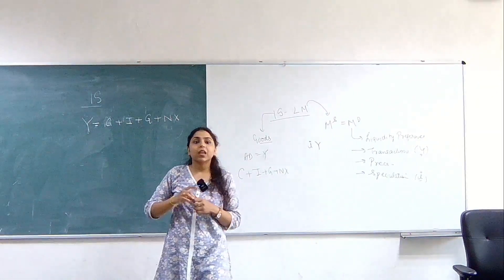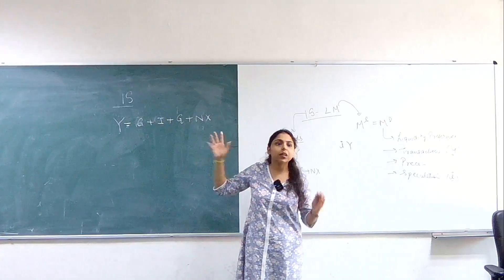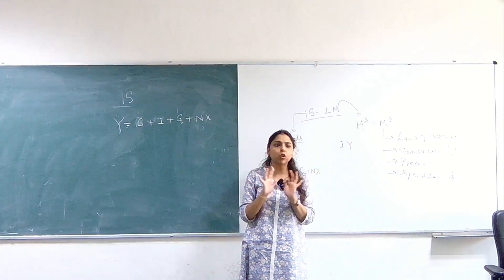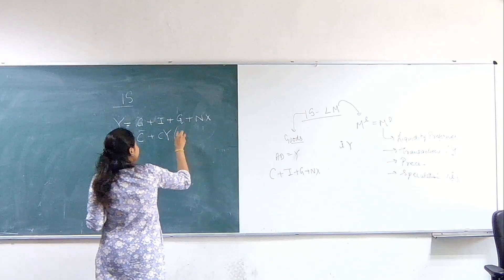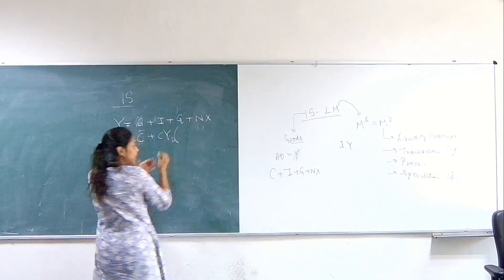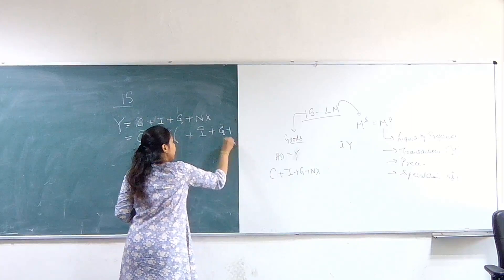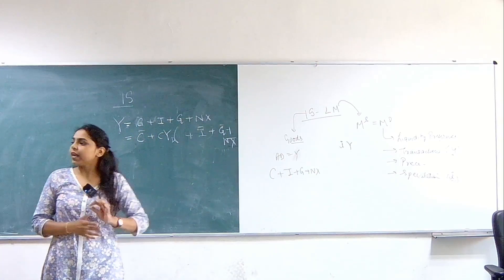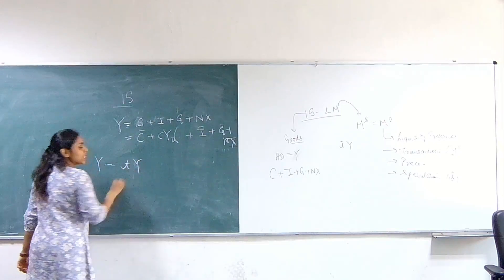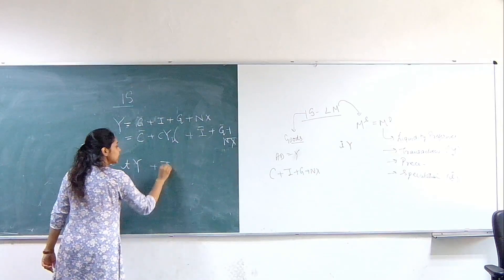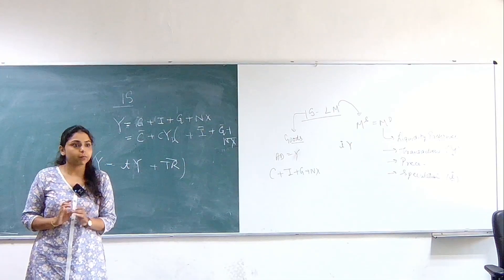So then what we had done, we had expanded these curves. We had some expansion of the consumption function. Then we brought in government and we have done that whole analysis previously. So what we can write this as C bar plus C times disposable income plus I bar plus G bar plus NX bar. This is what we had done in the last class. And what is disposable income? Disposable income is income minus any tax that you pay out of this income plus any transfer that you receive from this income.